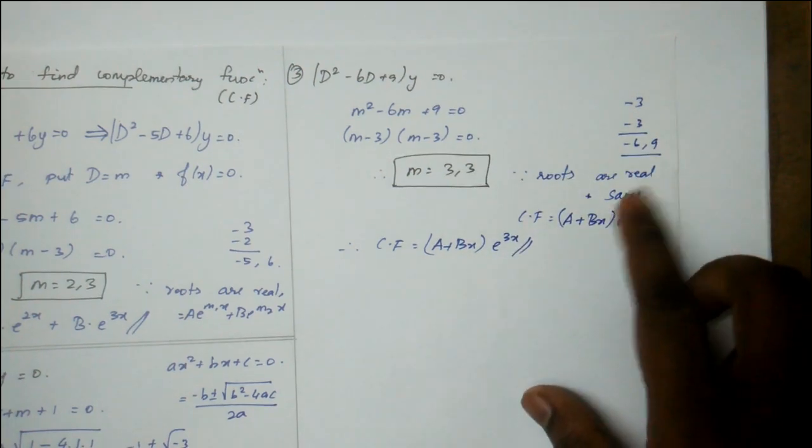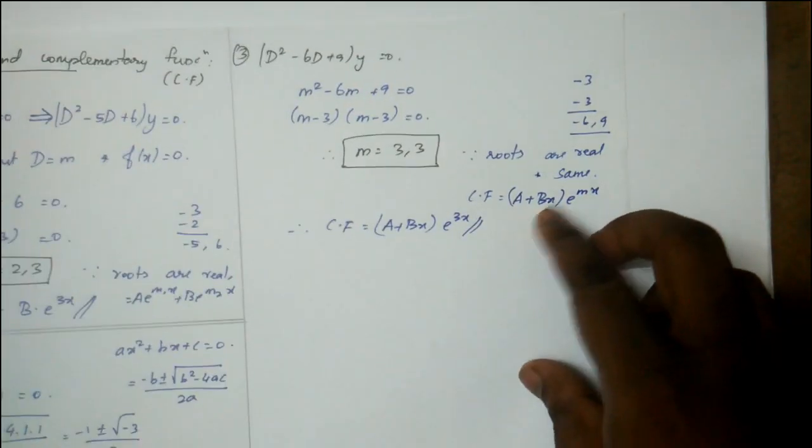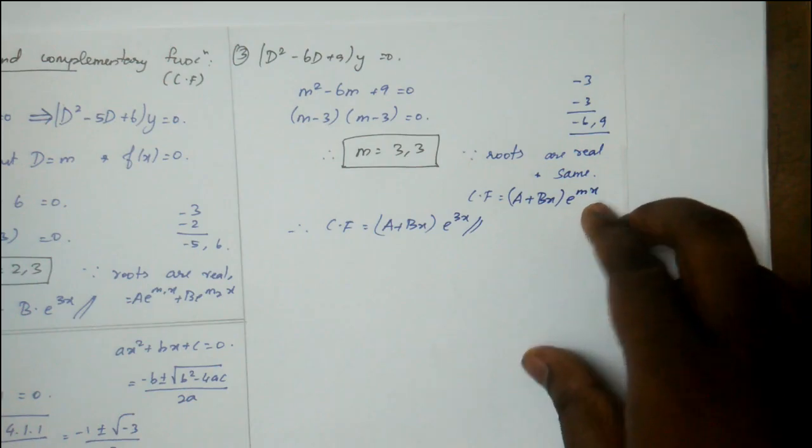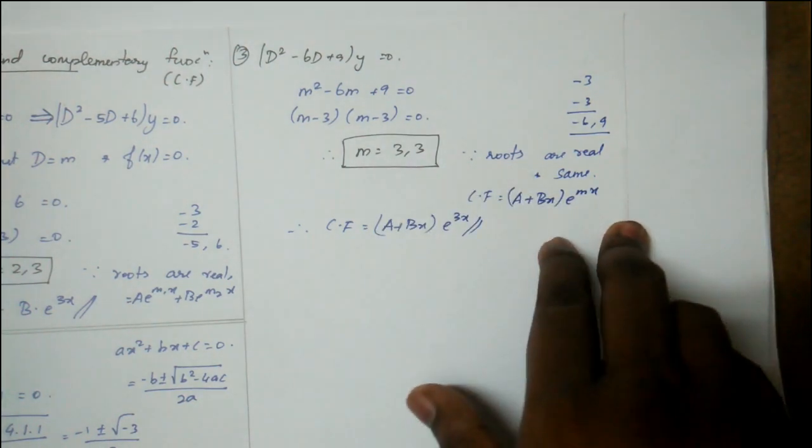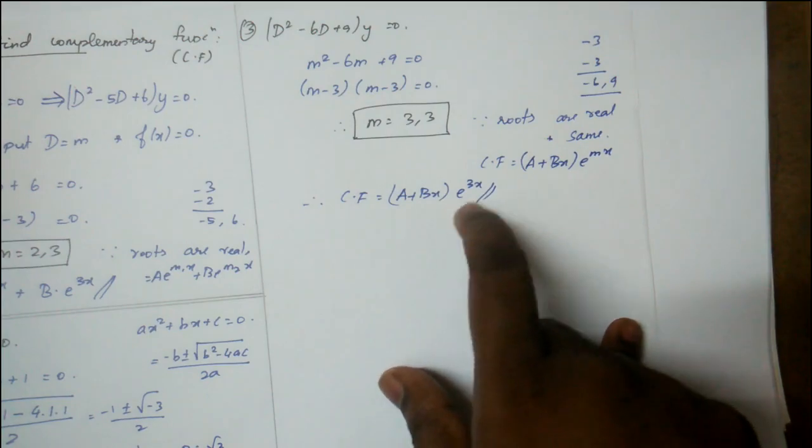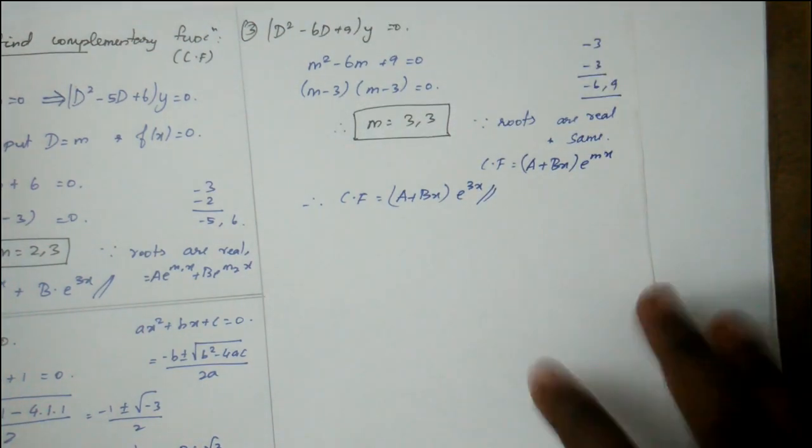When roots are real and same, the formula is (A + Bx)e^(mx). Substitute the root value directly: (A + Bx)e^3x. That's all.